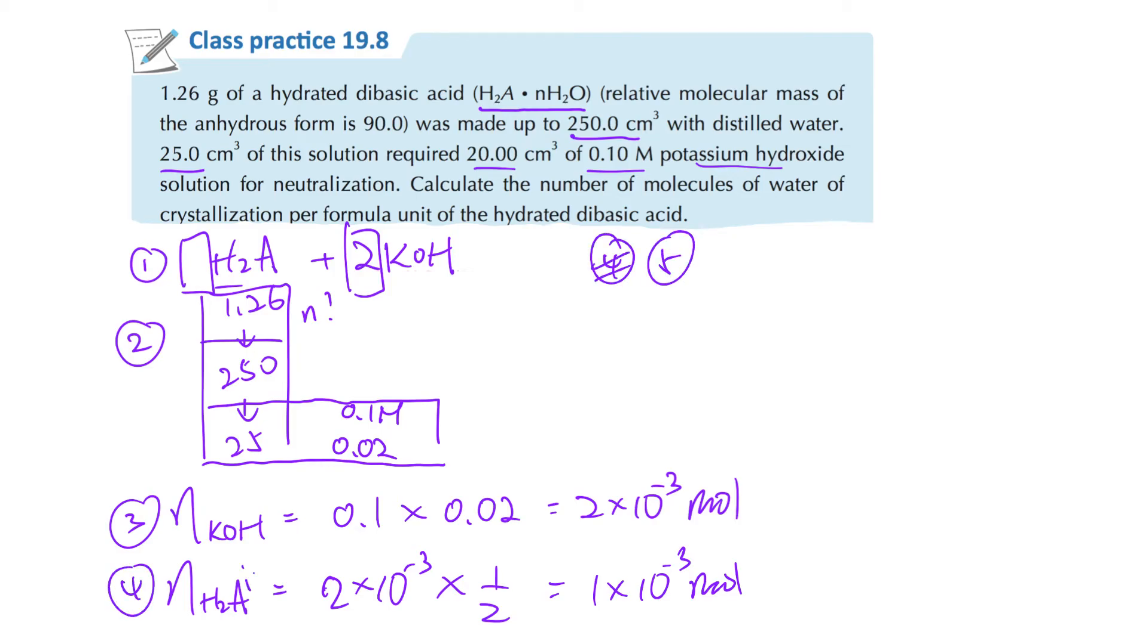H₂A in 25 cm³. I forgot to write. So this one will be H₂A in 250 cm³. So for this one, will be 1 times 10 to negative 3 divided by 25. So original is 25 now become 250. So times 250 portion for that. Then this one will be 0.01 mole.